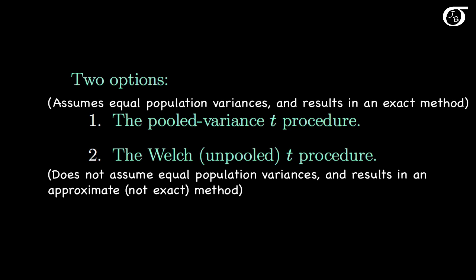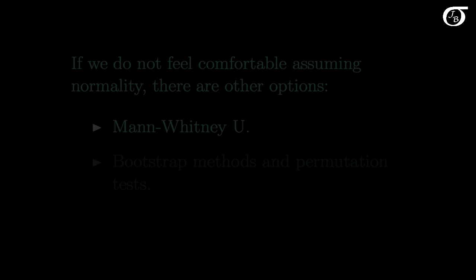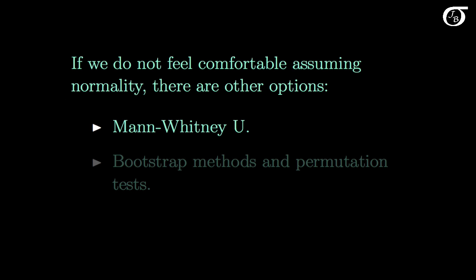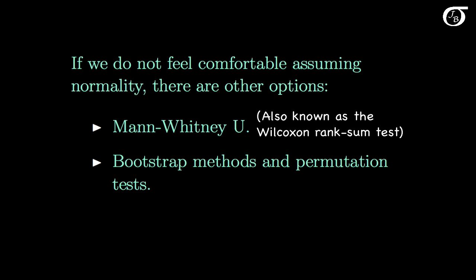I discuss both of these procedures in much greater detail in other videos. If we do not feel comfortable assuming normality, there are other options available to us. One of them is the Mann-Whitney-U test, also known as the Wilcoxon rank sum test. This is a very commonly used non-parametric procedure that does not assume normally distributed populations. Other options include more modern methods like the bootstrap methods and permutation tests.